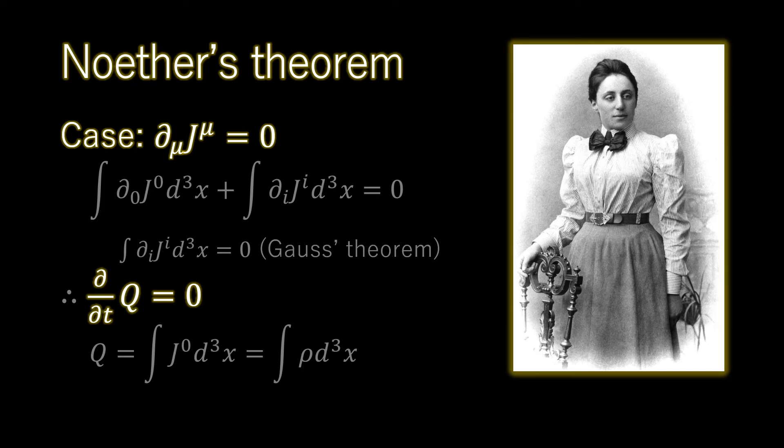Whenever there is an invariance of the theory under some transformation, a conserved current arises and can be written down in terms of appropriate derivatives of the Lagrangian.